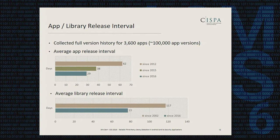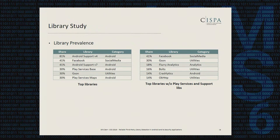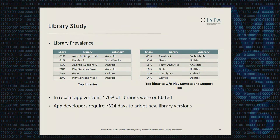Looking at the most popular libraries used by application developers, unsurprisingly eight out of the top ten libraries were either Android support libraries or Google Play service libraries. Filtering those out, Facebook is the top library in our list, followed by various utility analytics libraries and advertisement libraries. If we only take into account the most recent version of each app, about 70% of included libraries are outdated — often not just by a single version, but by two, three, or even more versions.